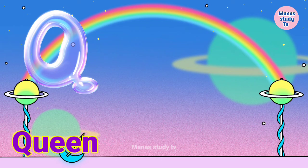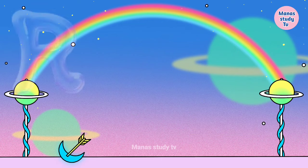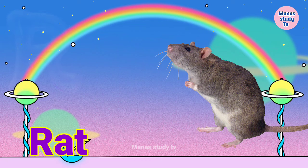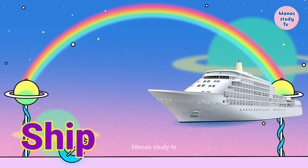Q. Q for queen, queen means rani. R. R for rat, rat means rat, rat means chua. S. S for sheep, sheep means jahad.